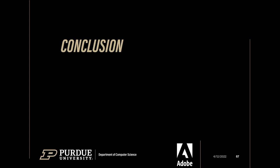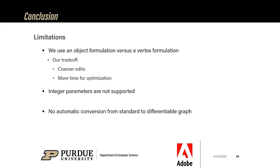We introduce a new procedural modeling system that lets the user manipulate the generated output directly in the viewport and propagates edits back to the input parameters. To make everything real-time, we use a proxy differentiable representation of the procedural model, which significantly accelerates optimization when matching user edits. In terms of limitations, edits are at the object level versus the vertex level — coarser, but significantly faster. Like related work, we do not support integral parameters, only continuous real-valued parameters, as integer parameters make optimization very complicated.